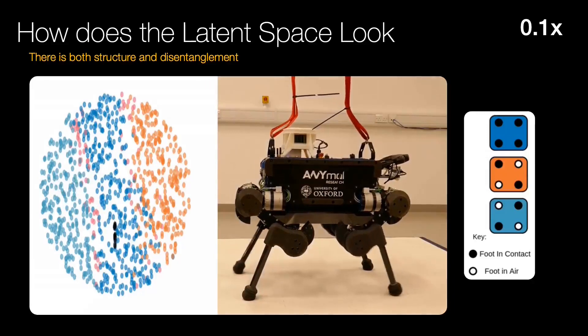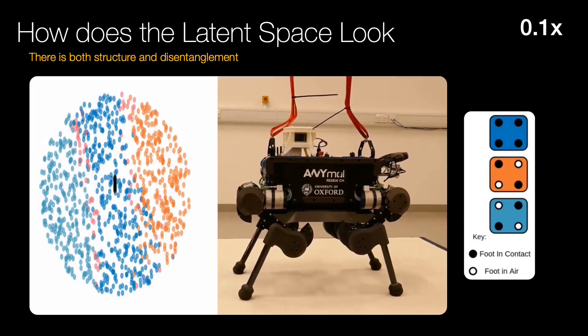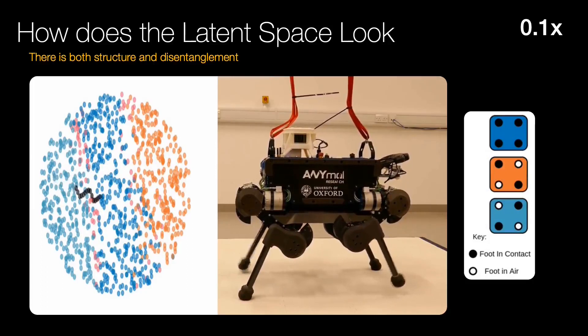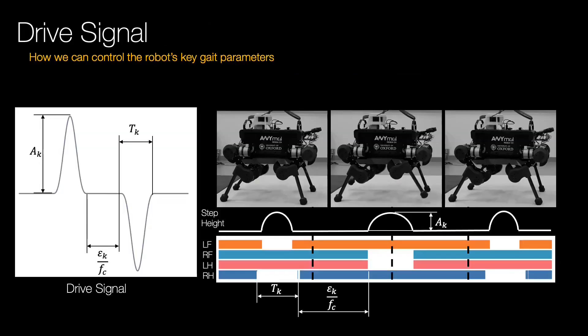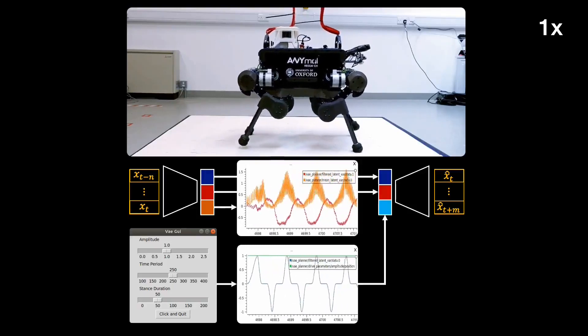Here we show the latent space which has become disentangled into just two dimensions. The robot's footstep length is aligned along the vertical axis, while the robot's footstep height is along the horizontal. We exploit this structure by injecting a sine-cubed oscillation drive signal into the latent space. The drive signal's amplitude and phase provide continuous control over the cadence, full support duration, and foot swing height. Now we demonstrate continuous gait variation by modulating this signal.